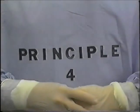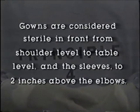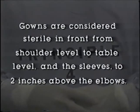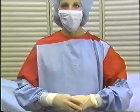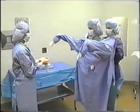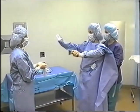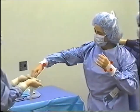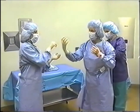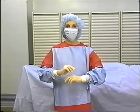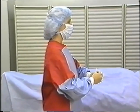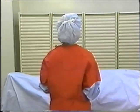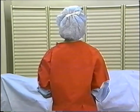Principle number four: gowns are considered sterile in front from shoulder level to table level, and the sleeves to two inches above the elbows. Gowns are considered sterile until they are put on. Once hands touch the stockinette cuffs, the cuffs are considered unsterile and must be covered with sterile gloves. Sterile persons should keep their hands close to their body in front, only within the designated sterile area of the gown. The back of a wrap-around gown is considered unsterile because it cannot be constantly observed.